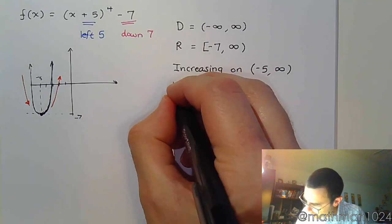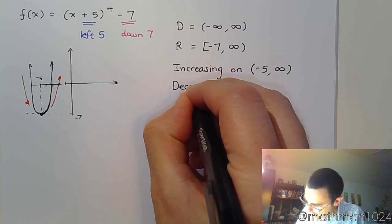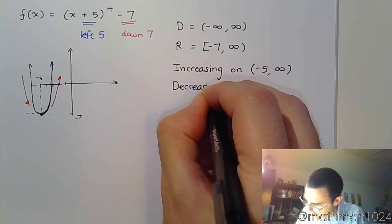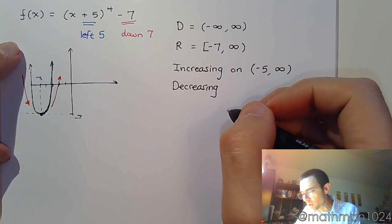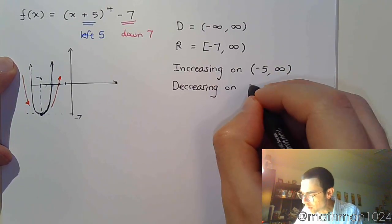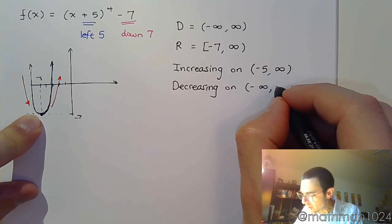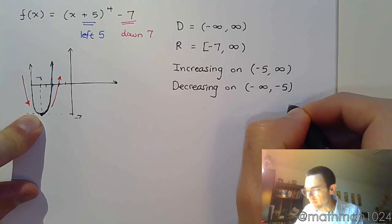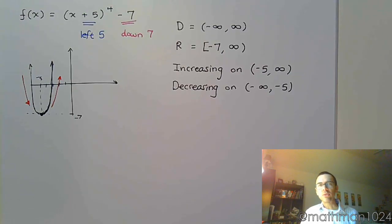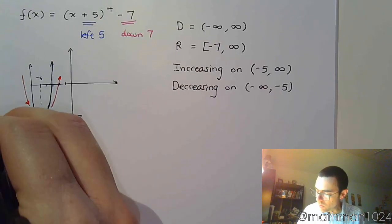And then we are decreasing. Where are we decreasing? Well, you see that we're decreasing on that open interval from negative infinity to this x value of negative five. Those open intervals are going to be over sections of your domain for increasing and decreasing. And so that's information that we can get from this one function.